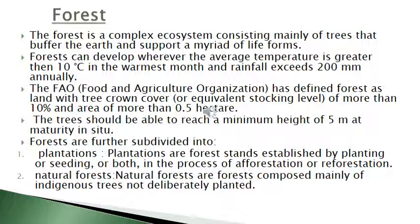Plants provide habitat to different types of organisms. Birds build their nests on the branches of trees, animals and birds live in the hollows, and insects and other organisms live in various parts of the plant. Plants produce large quantities of oxygen and take in carbon dioxide. Transpiration from the forest affects the relative humidity and precipitation in a place.